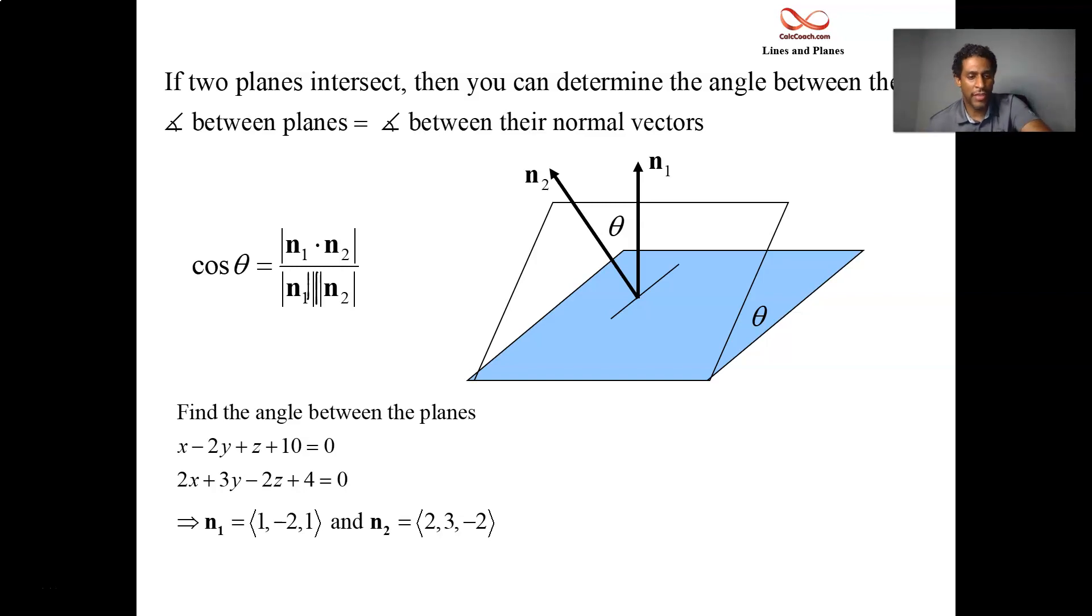What is the magnitude of n1? 1 + 4 + 1. Root 6. What is the magnitude of n2? 4 + 9 + 4. Root 17. What's the dot product? 2 - 6 - 2 is -6.